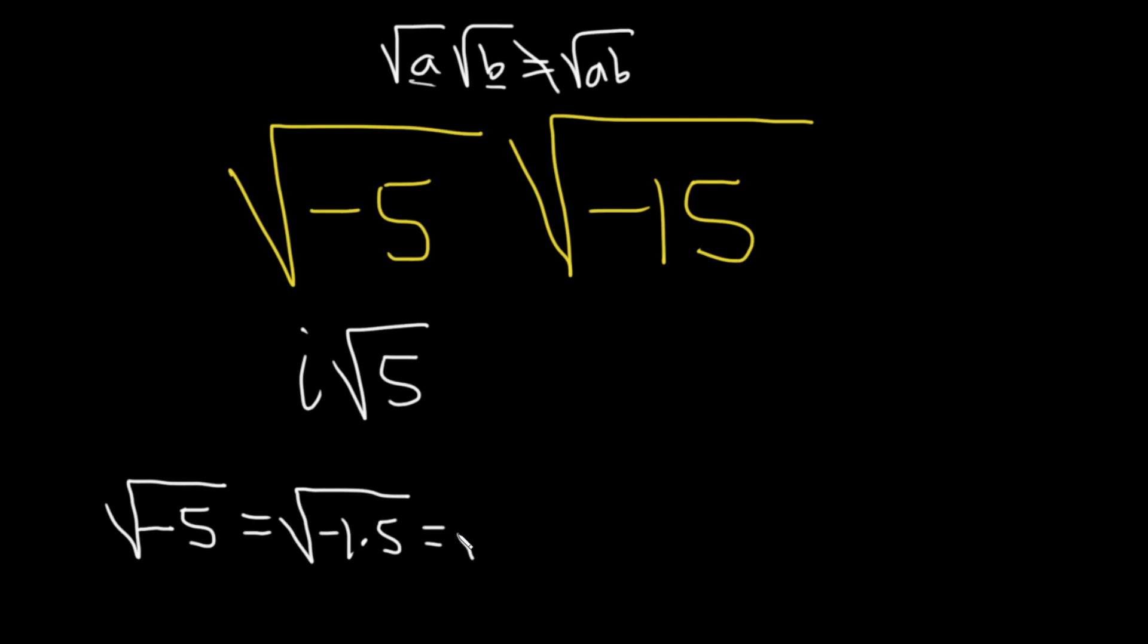And since one of these is positive, you can write this as the square root of negative 1 times the square root of 5. And the square root of negative 1 is i.